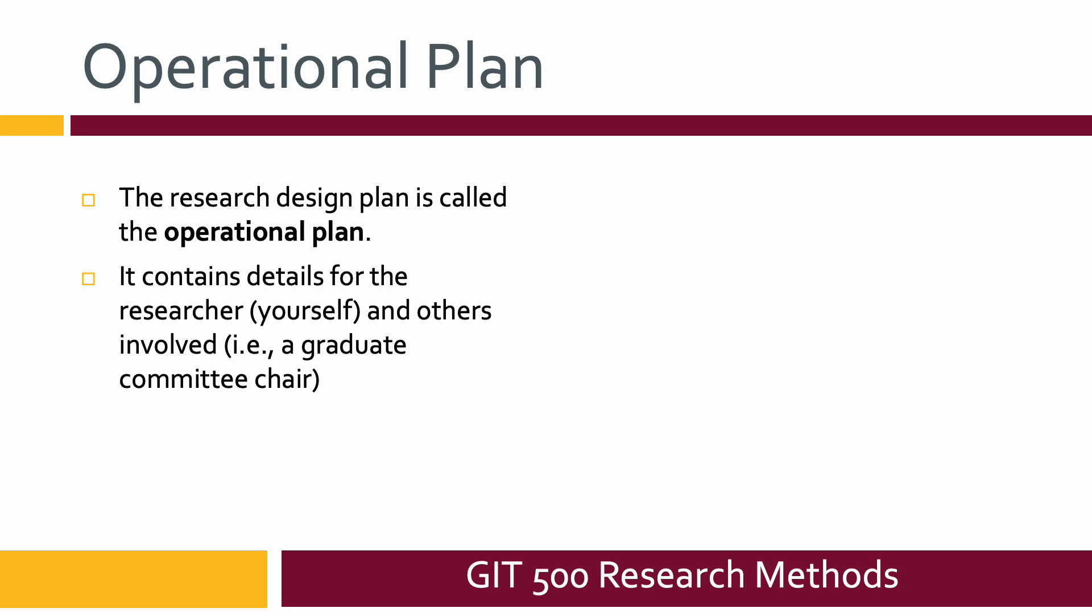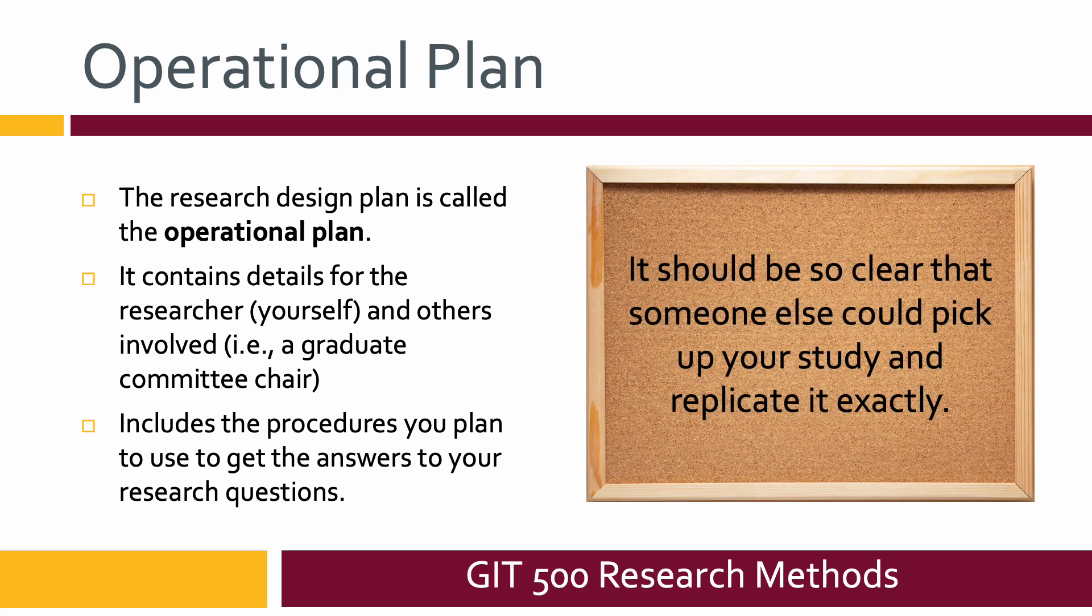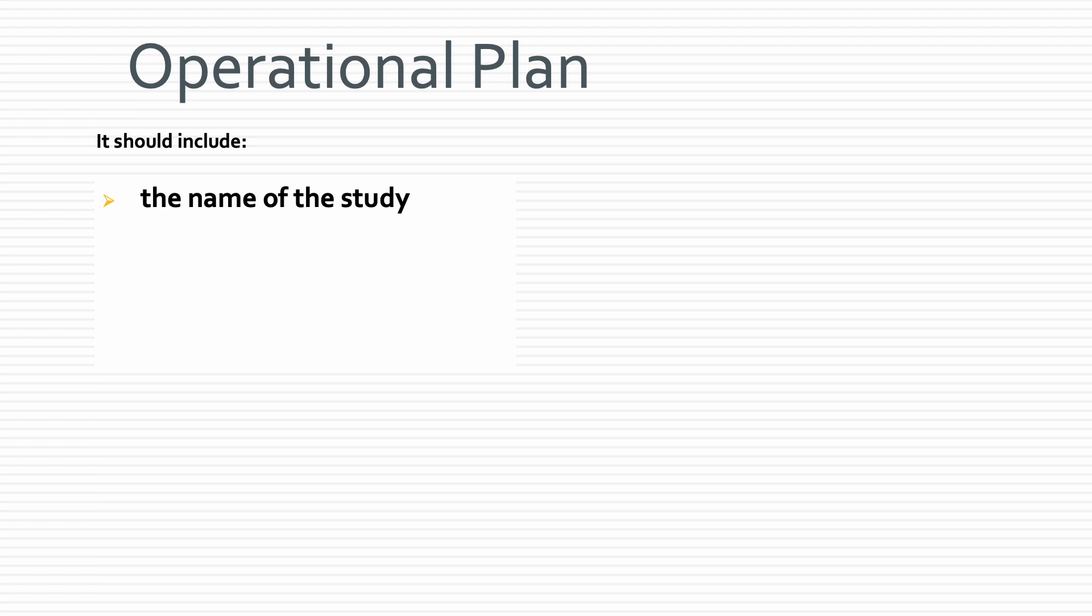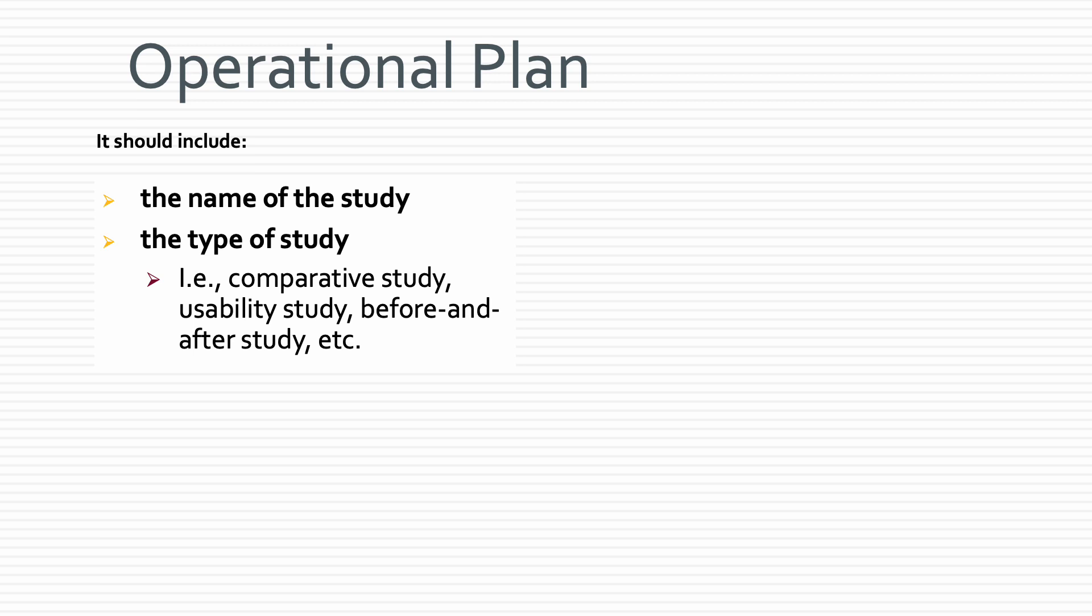It includes procedures that you plan to use to get the answers to your research questions. This operational plan should be so clear that someone could pick it up and replicate it exactly. The operational plan should include quite a few things. Of course it needs to have the name of the study, which should be creative but also should indicate what the study is about, what the topic is. The type of study, and we'll talk more about that in the next lecture.